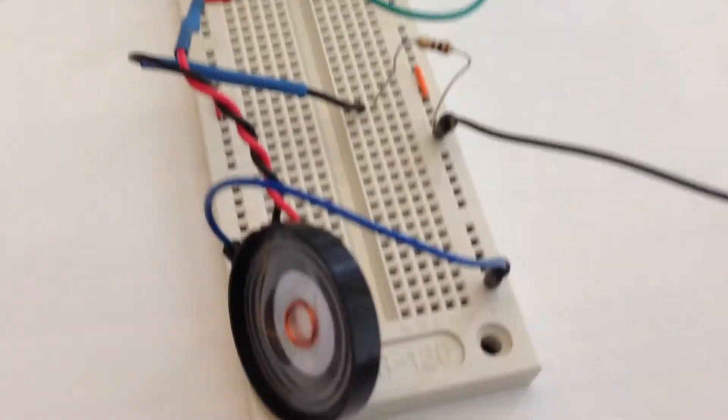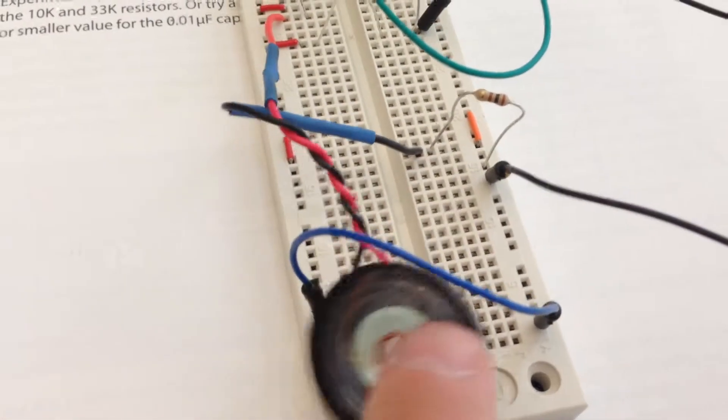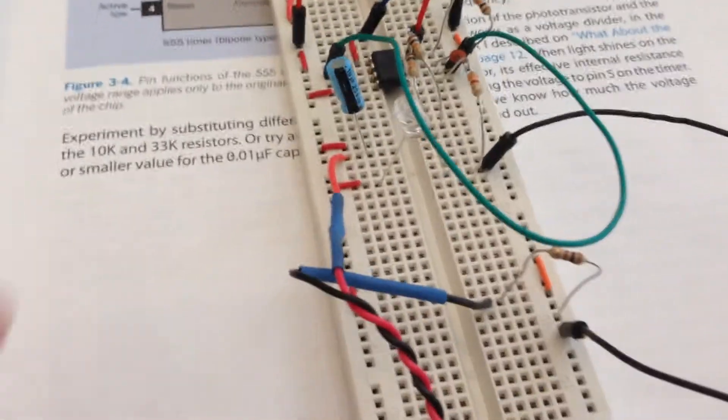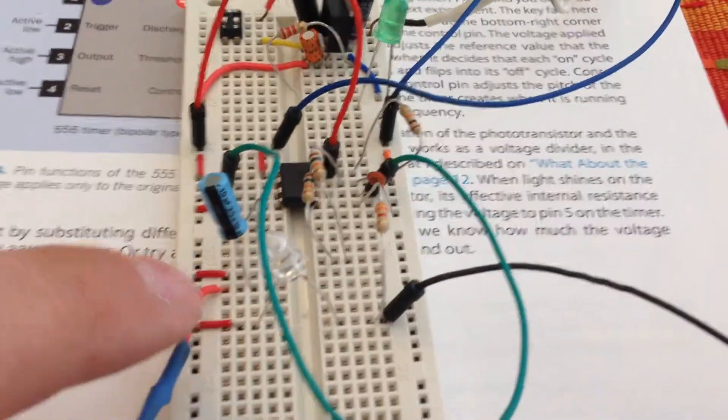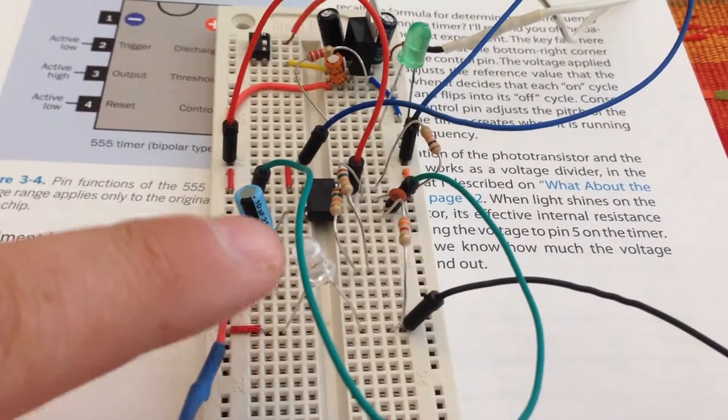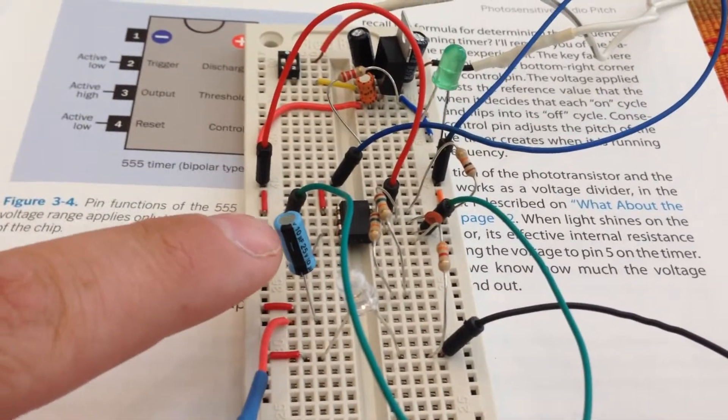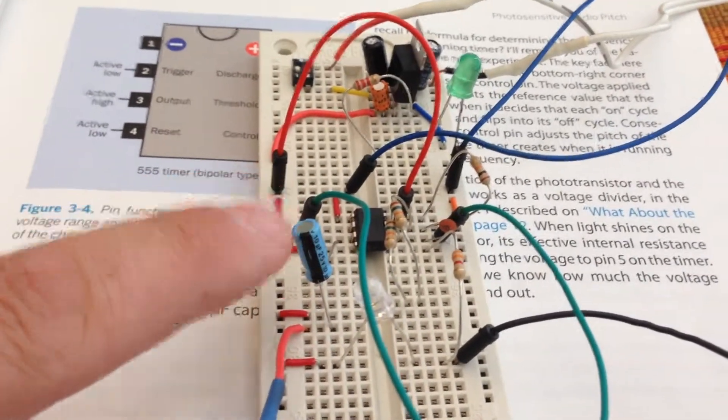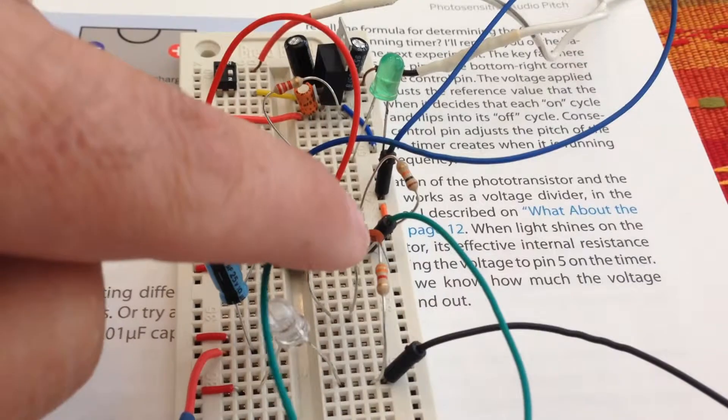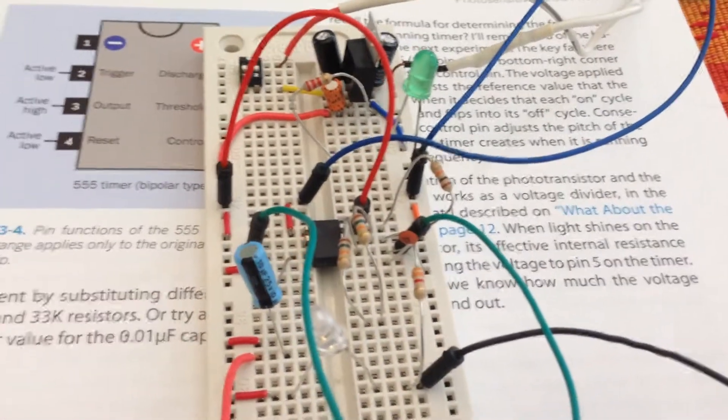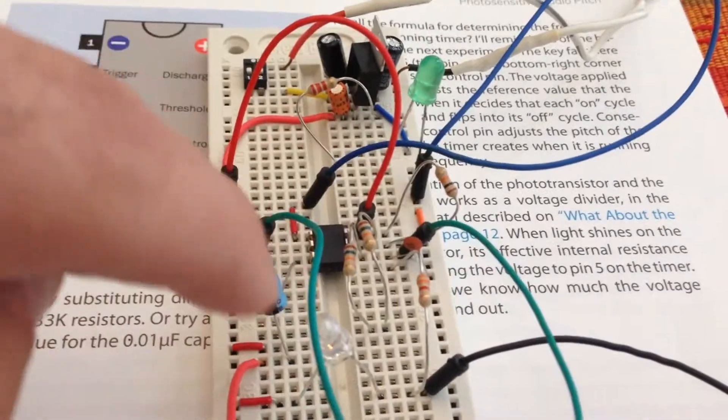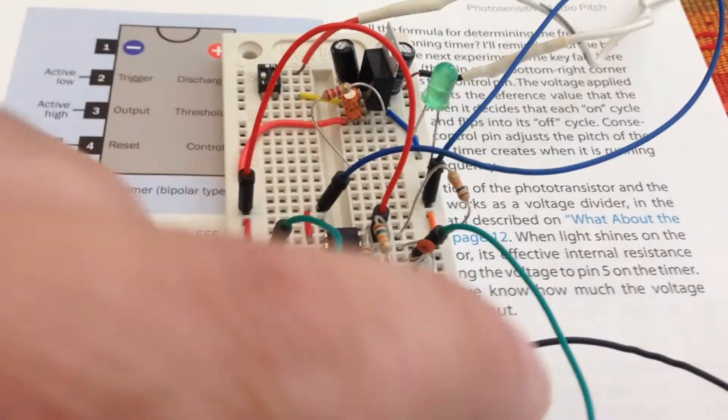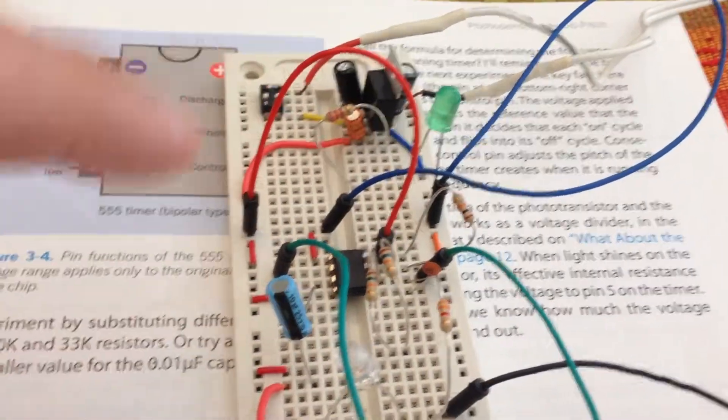Let me go over a few details here. Here's the speaker. I've used a jumper wire just to hold it in place so it doesn't fall off. Here is the phototransistor. It looks like an LED, but it is not. Here is the 10 microfarad capacitor. And the little teeny one right down there is the 0.01 microfarad. You've got the 555 timer chip right in the center. Some various resistors and jumper wires.